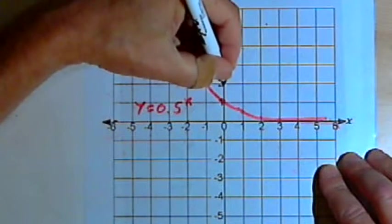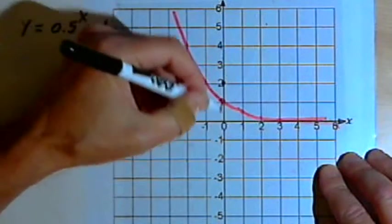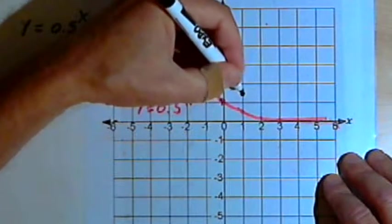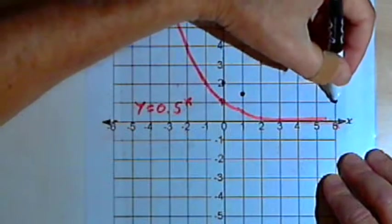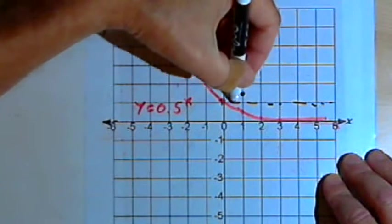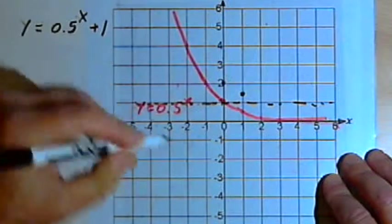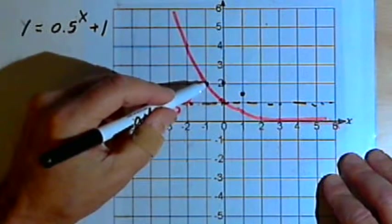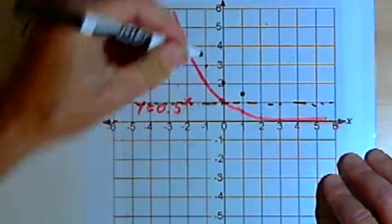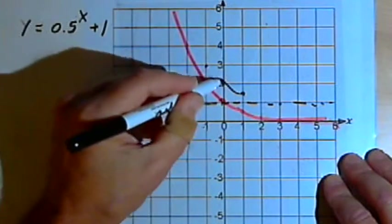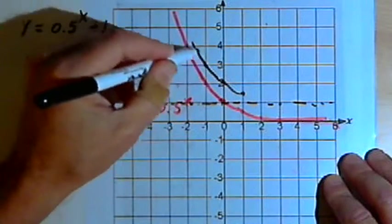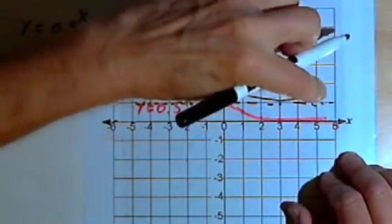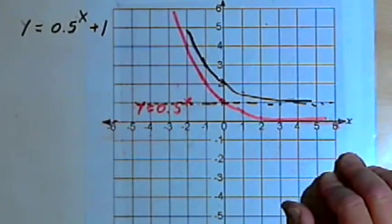So I'm going to have a point at 0, 2. I'll have a point at 1, 1.5. I'll have a horizontal asymptote at y equals 1. And then I can take those points, sketch in that graph, and it's just raised everything up by one unit.